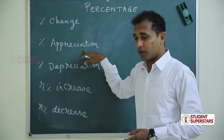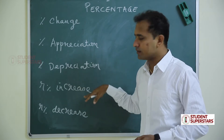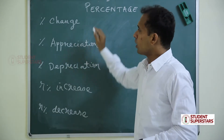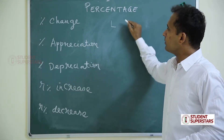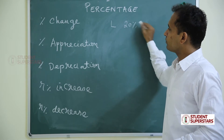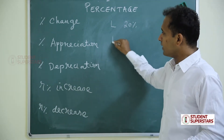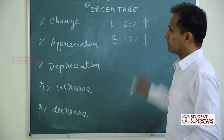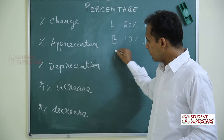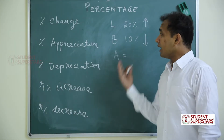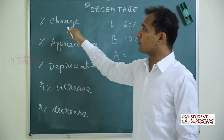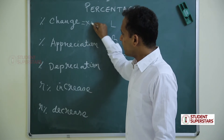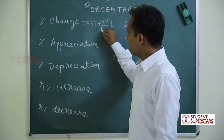In this topic there are a few formulas that you should remember: percentage change, percentage appreciation, percentage depreciation, percentage increase, and percentage decrease. For percentage change — for example, the length of a rectangle increases by 20 percent but the breadth decreases by 10 percent. We use the formula: percentage change = x + y + (xy / 100).